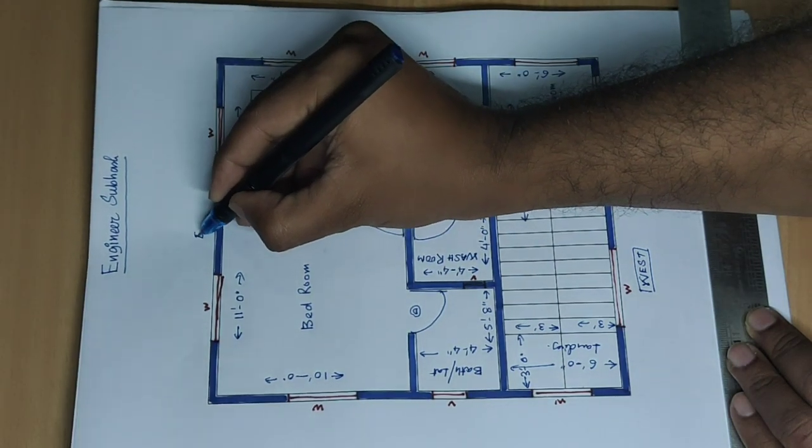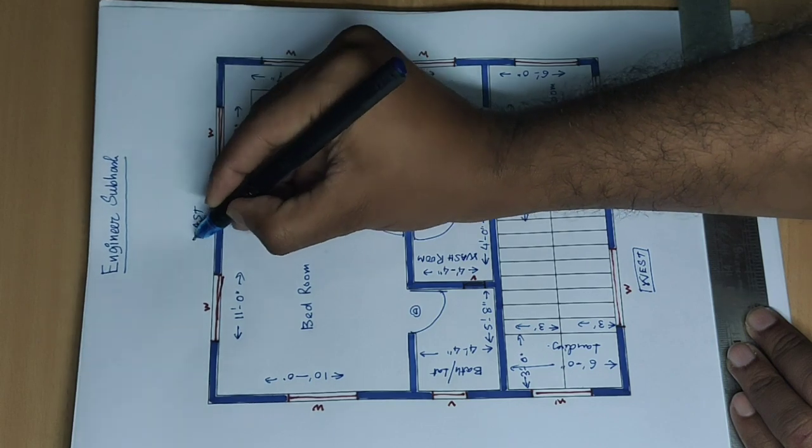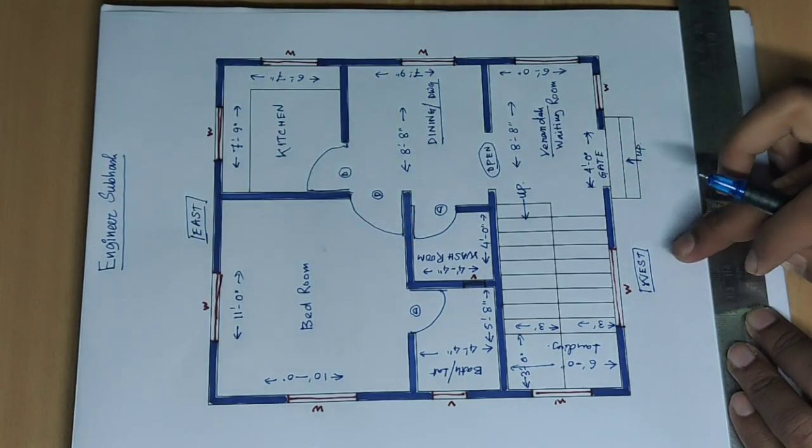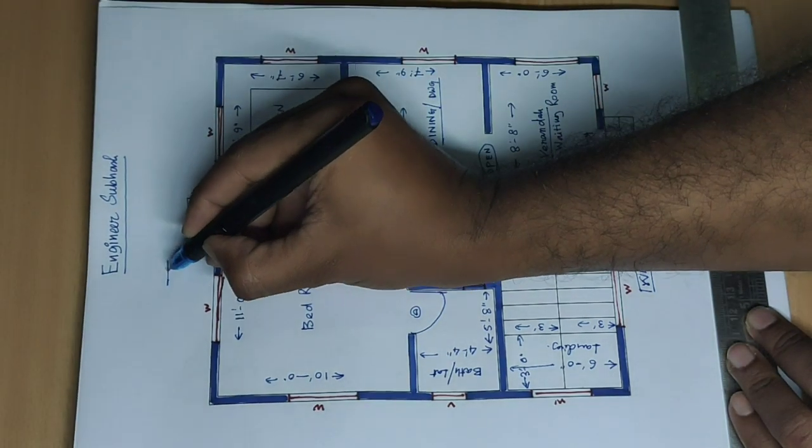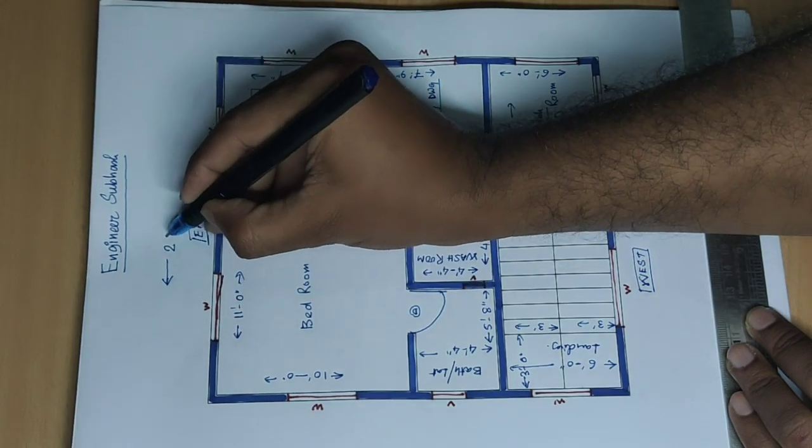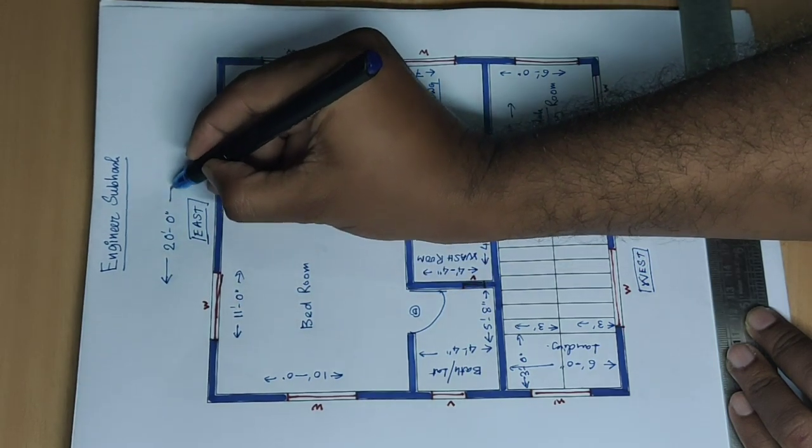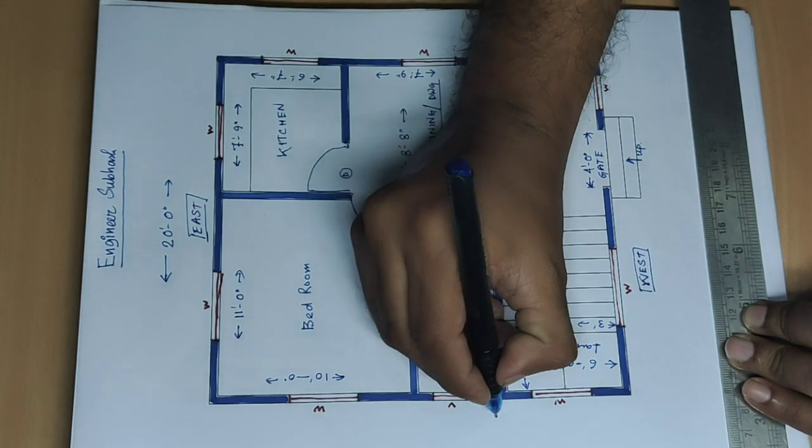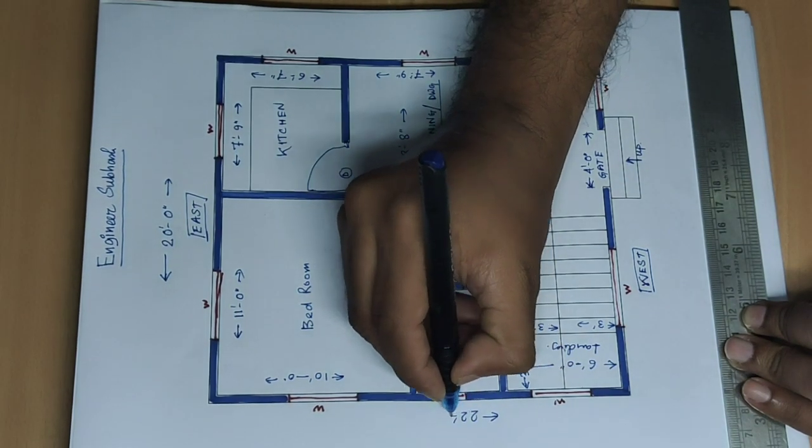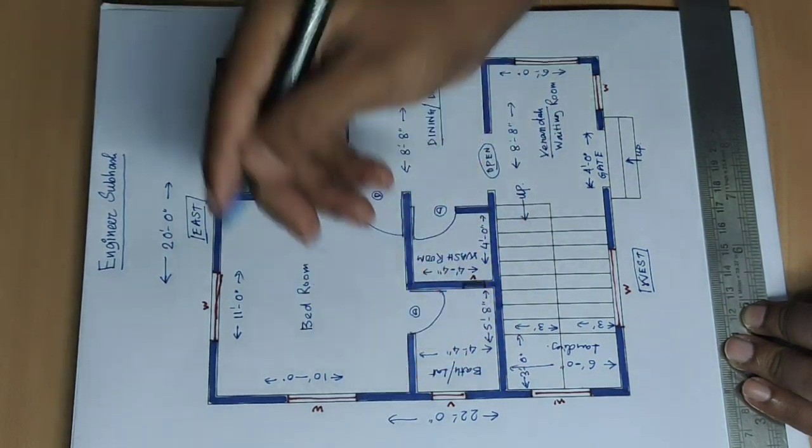East direction front side, west. This side 20 feet 7 inch and other side 22 feet 7 inch.